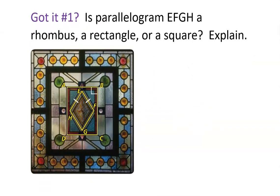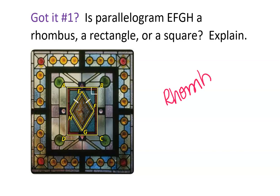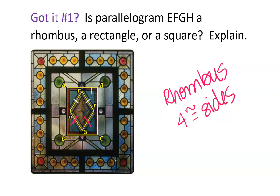For parallelogram EFGH in the middle — what is that one? When you're looking at it, why is it a rhombus? Congruent sides. It's a parallelogram, so we already know opposite sides are the same. If opposite sides are the same and they're all marked with a single hash mark, then all four sides are congruent. So four congruent sides — that makes it a rhombus. Keep the description simple.